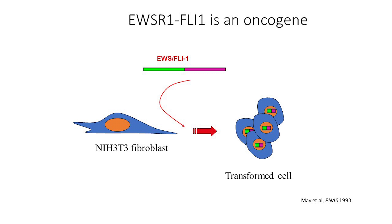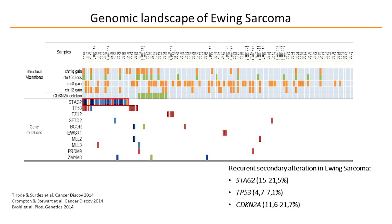This translocation is clearly oncogenic — this was shown very quickly after cloning: if you express EWS-FLI1 in non-malignant fibroblasts, you transform them into cells that form tumors in nude mice. In terms of genetic alteration, the translocation is always present, and apart from this, the genome is relatively quiet with very few additional abnormalities — a few copy number changes involving usually whole chromosome arms.